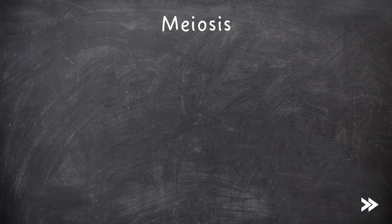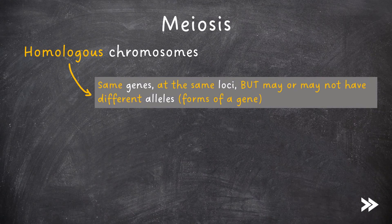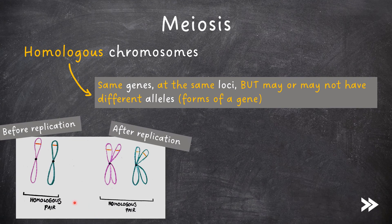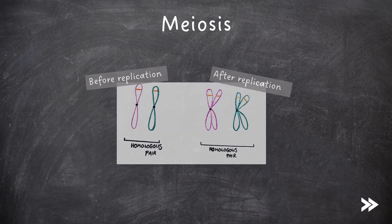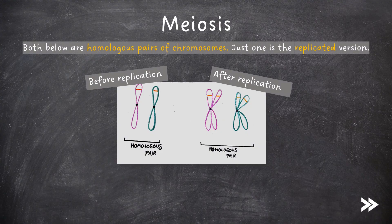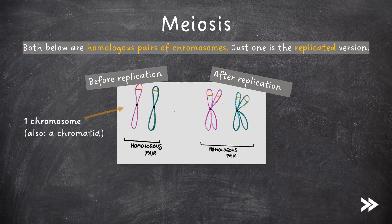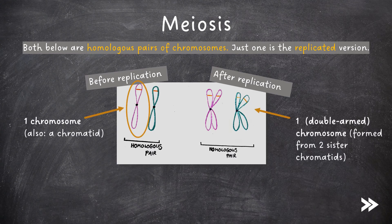Before we move on to the exact mechanisms of meiosis, it's important to clarify a few key terms. Homologous chromosomes have the same genes at the same loci, but may or may not have different alleles. In this diagram, we can see homologous pairs of chromosomes with the same genes — for example the gene coding for eye colour located at the same locus — but they may have different alleles, such as one coding for blue and one for brown eyes. Note that both examples shown are homologous pairs, just one is before replication and one is after. Each of these four are chromosomes; on the left the two individual ones are chromatids, and on the right the chromatids have replicated to form double-armed chromosomes, also known as sister chromatids.